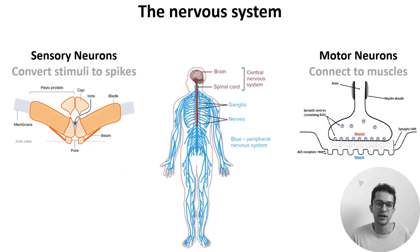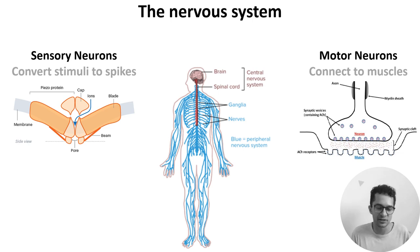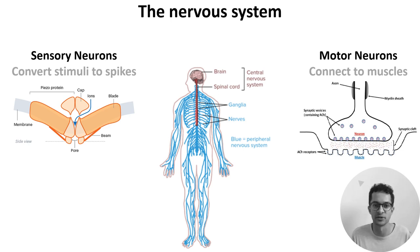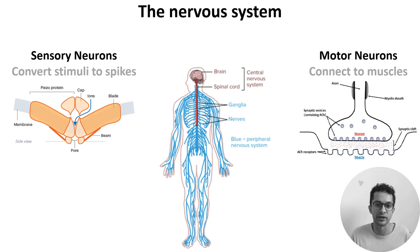Zooming out, the entire nervous system is composed of two parts: the central nervous system, consisting of the brain and spinal cord, and the peripheral nervous system, which carries information in two directions. Sensory neurons convert external stimuli to spikes and carry these signals to the spinal cord and brain — for example, neurons which sense pressure have specialized channels known as piezo channels, which physically deform in response to pressure, allowing ions to flow in and triggering action potentials. In the other direction, motor neurons synapse with muscles at the neuromuscular junction, using the neurotransmitter acetylcholine to link neural activity to movement.